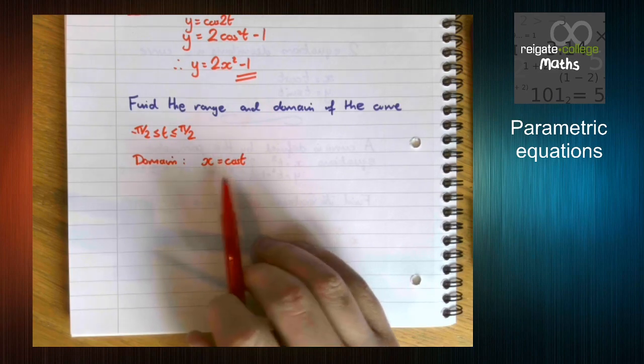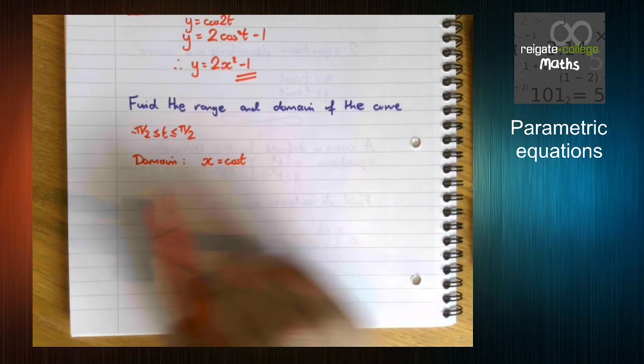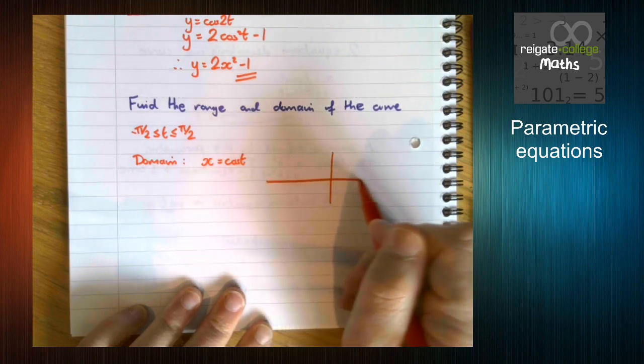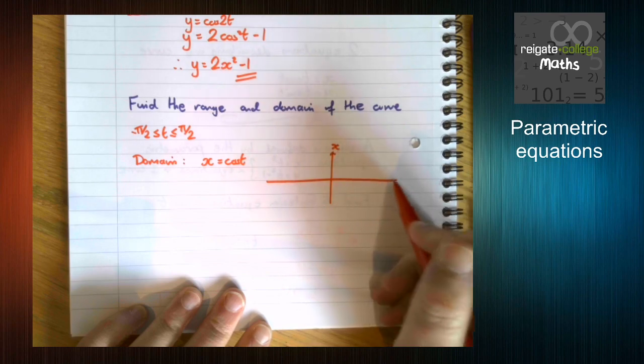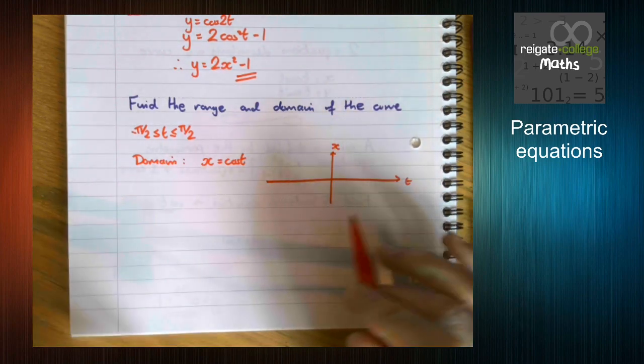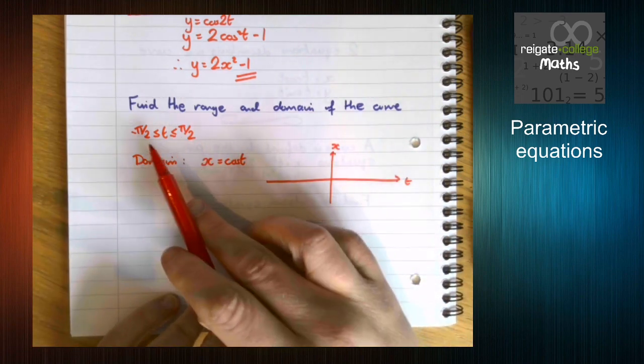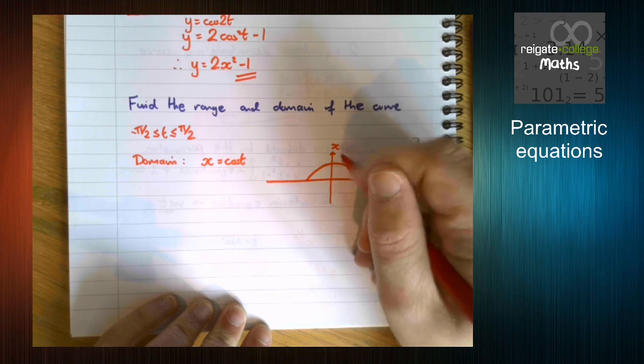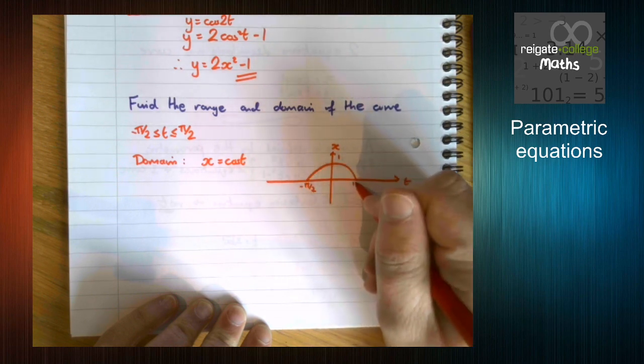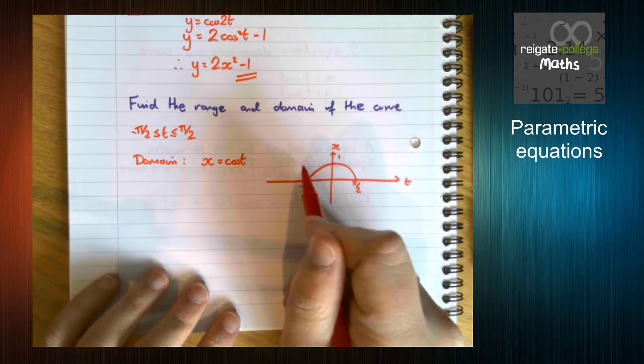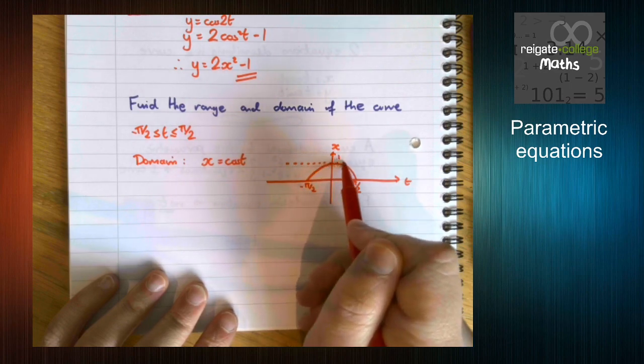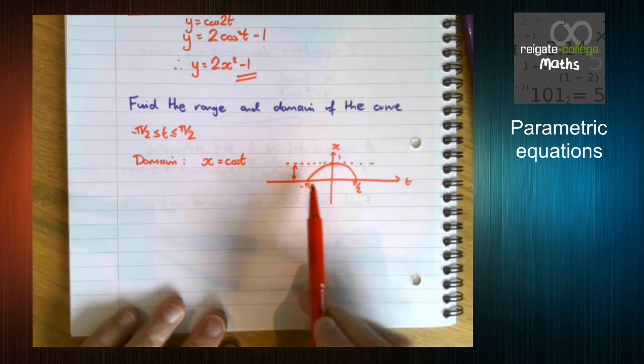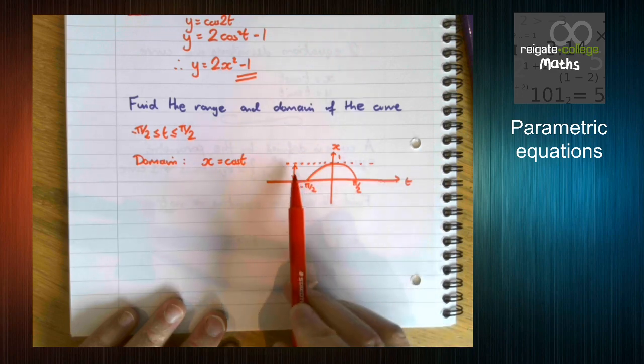So the domain is all to do with x. So we now have x equals cos t. If we think about this on its own, without anything around it, we can plot this graph, or we can sketch this graph, for t, the x being the y axis and t being the x axis. I know that's confusing, but there we go. So if we draw this for t is between minus pi over 2 and pi over 2, we get this graph. So we want to look at what values of x come out.